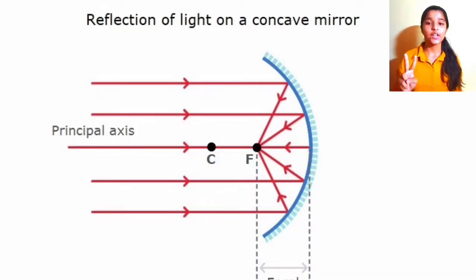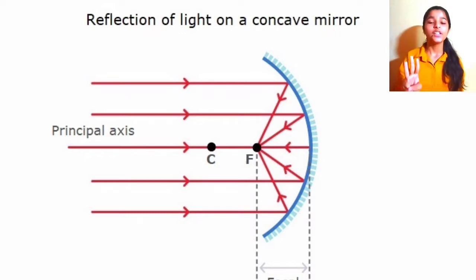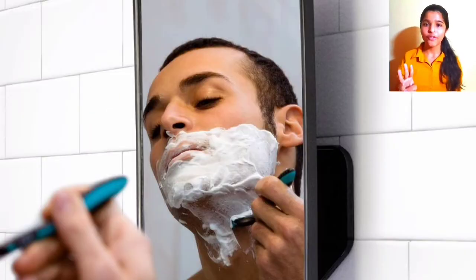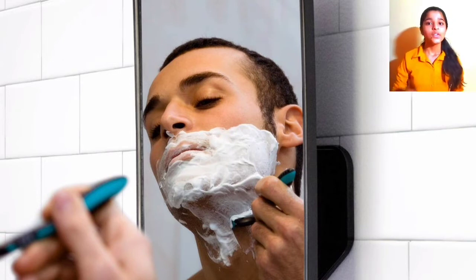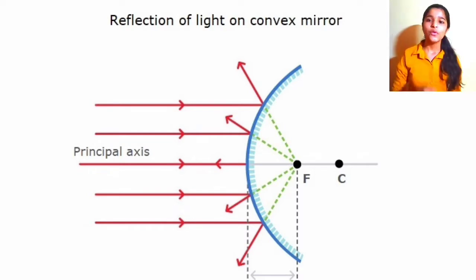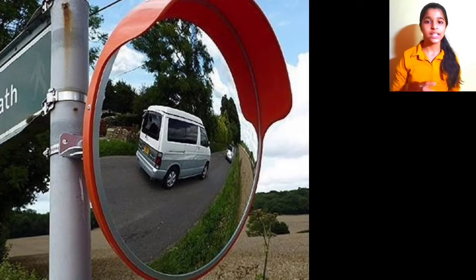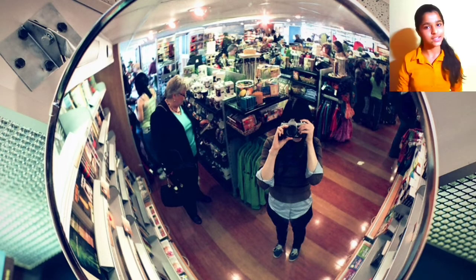The concave mirrors are used as a reflector to get a strong beam of light. The third one is to get a large image of our face — concave mirrors are also used as the shaving mirrors. And the fourth one is the large convex mirrors, known as the shop security mirrors. If one uses these mirrors in his or her shop, he or she can keep an eye on their customers.